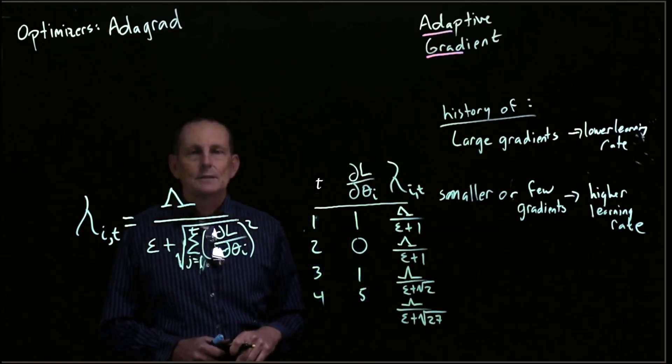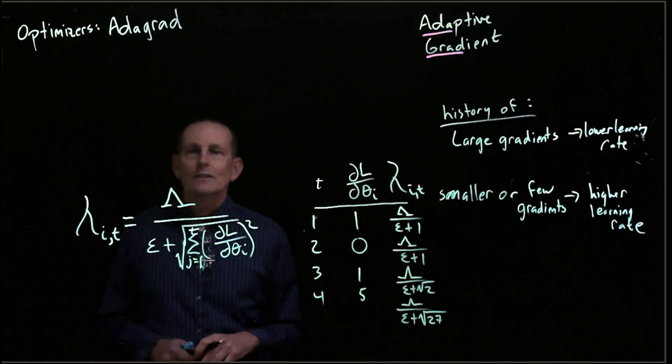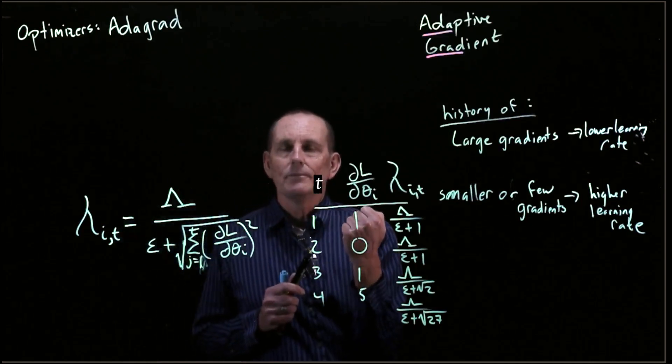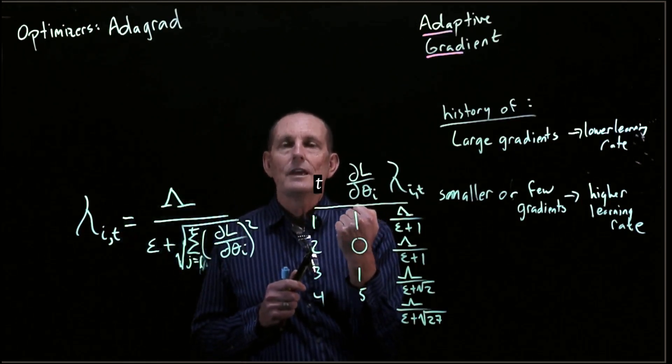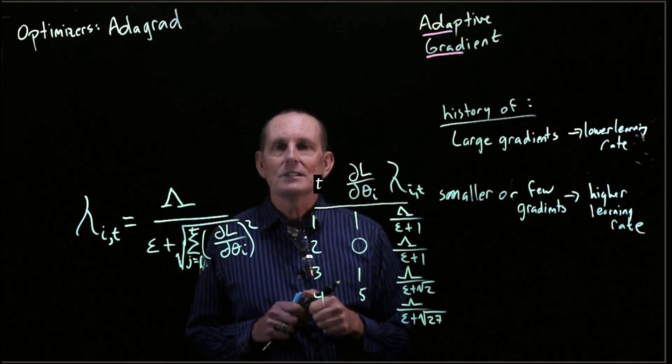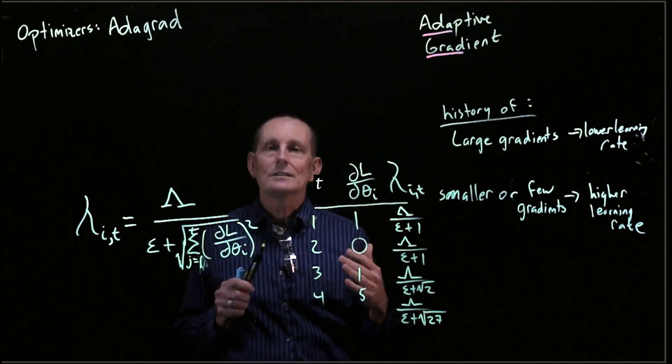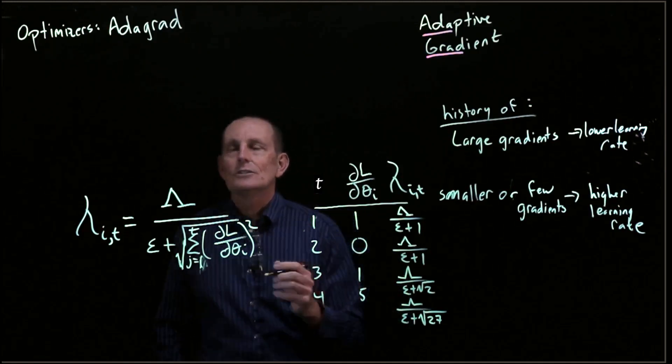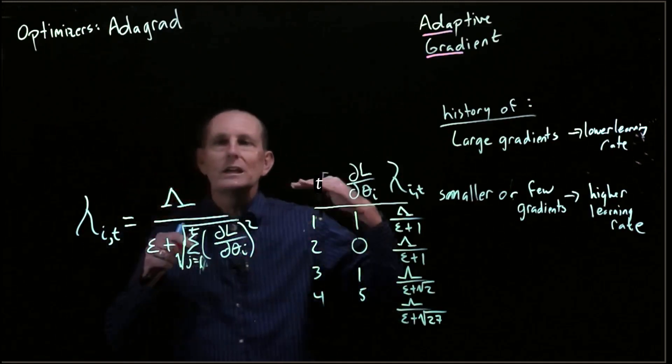So what happens is, if we have had not many updates to a parameter, then we're going to have a higher learning rate. If we've had a lot of updates to a parameter, or high gradients, then we're going to have a lower learning rate.